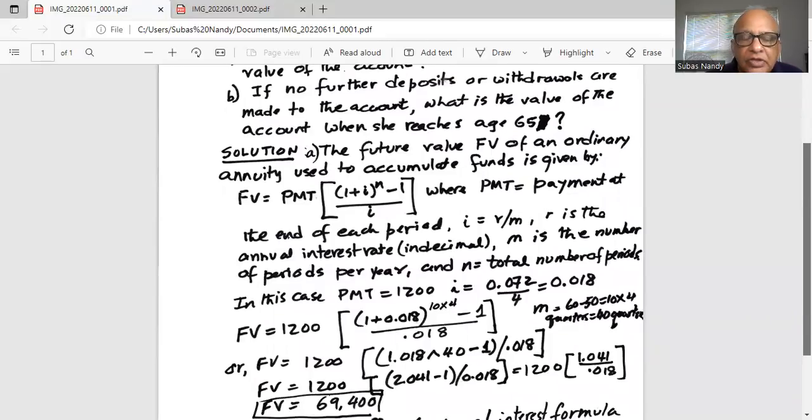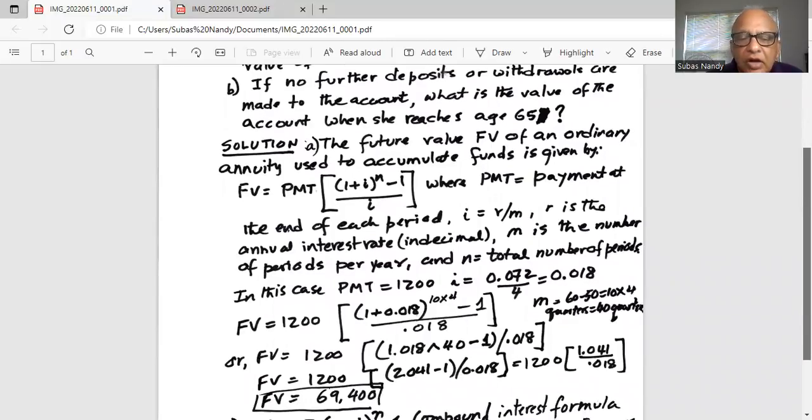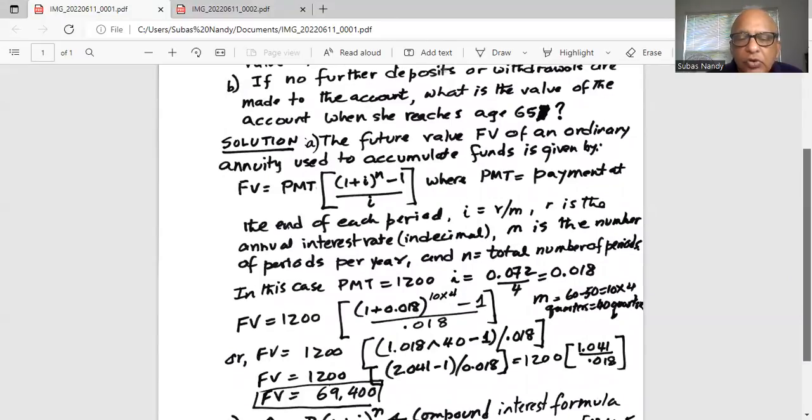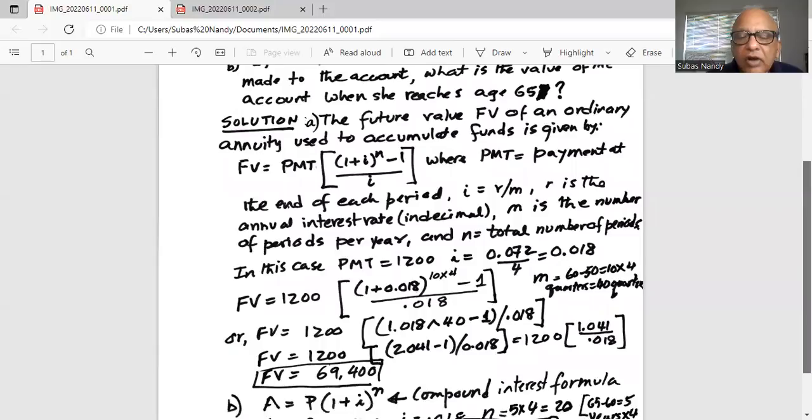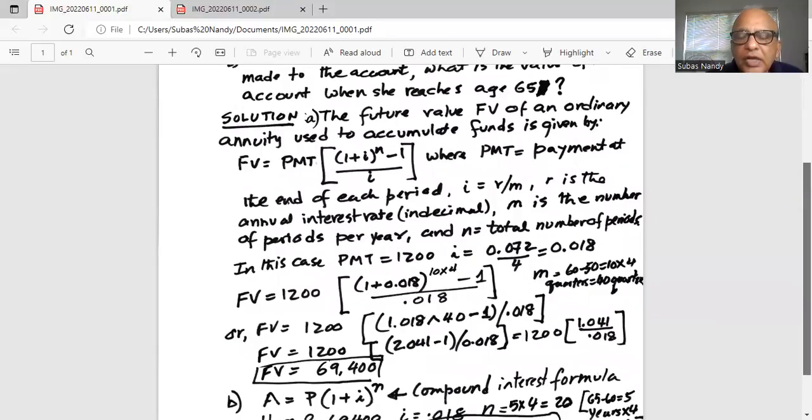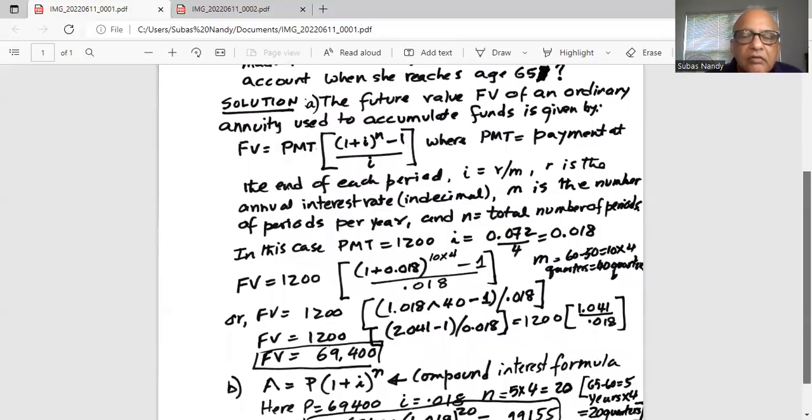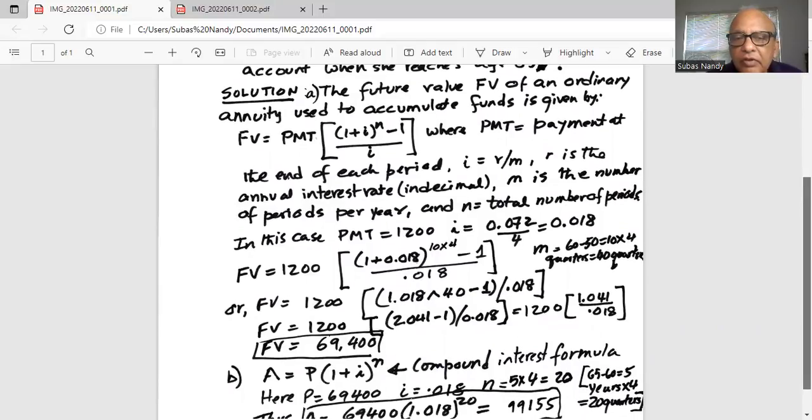FV, which is FV future value is equal to 1,200, that symbol is exponentiation or power 40 in my calculator TI84, minus 1 divided by 0.018. Or FV equals 1,200 in parenthesis, 1.018 exponent 40 is 2.041 minus 1 in parenthesis divided by 0.018, or 1200 multiplied by 1.041 divided by 0.018, which if we do the calculation correctly in our calculator will be 69,400.